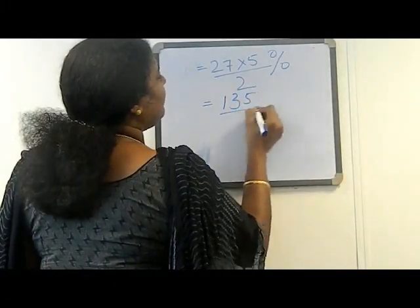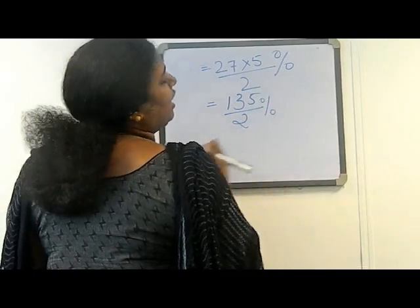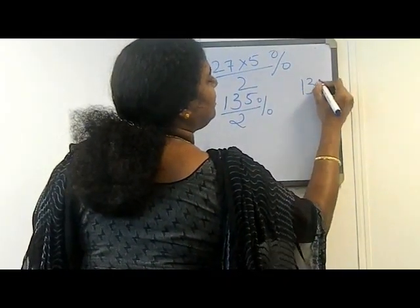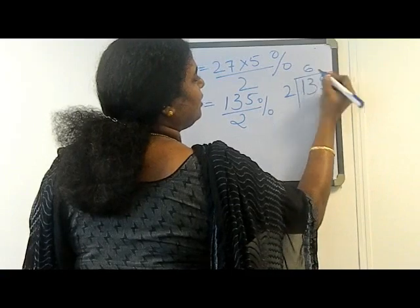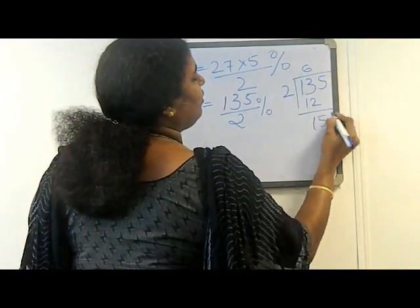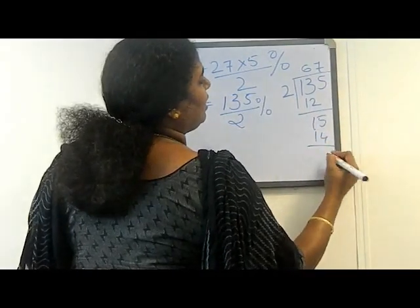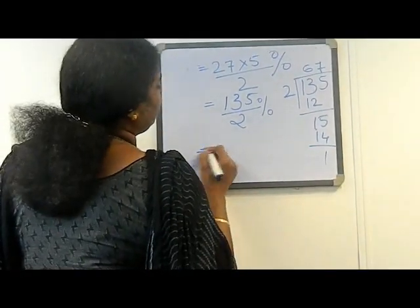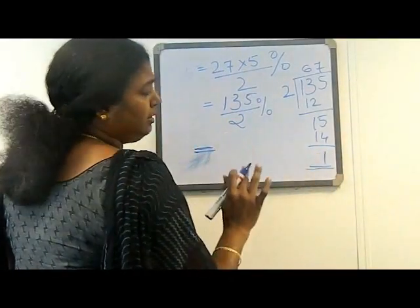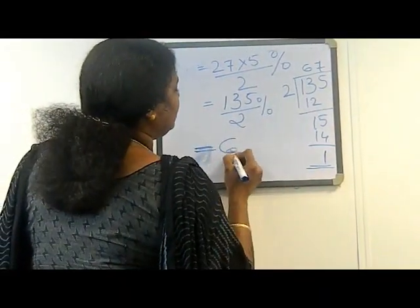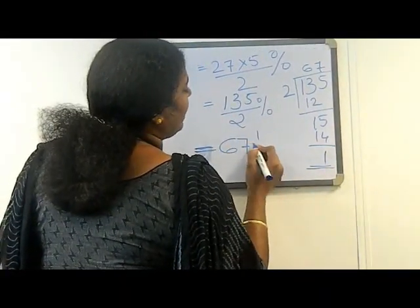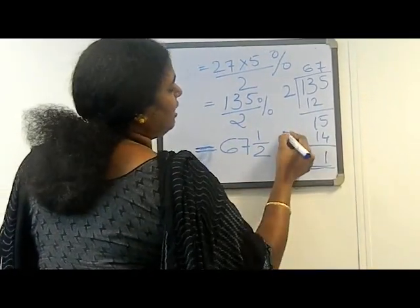The result is 135 divided by 2 percent. We already know how to convert this into a mixed fraction. Dividing 135 by 2: 2 goes into 13 six times (12), remainder 1; bringing down 5 gives 15; 2 goes into 15 seven times (14), remainder 1. If the remainder is not 0, this will be a mixed fraction. We write the quotient 67, then remainder 1 over denominator 2. That means 67 and a half percent is the answer.